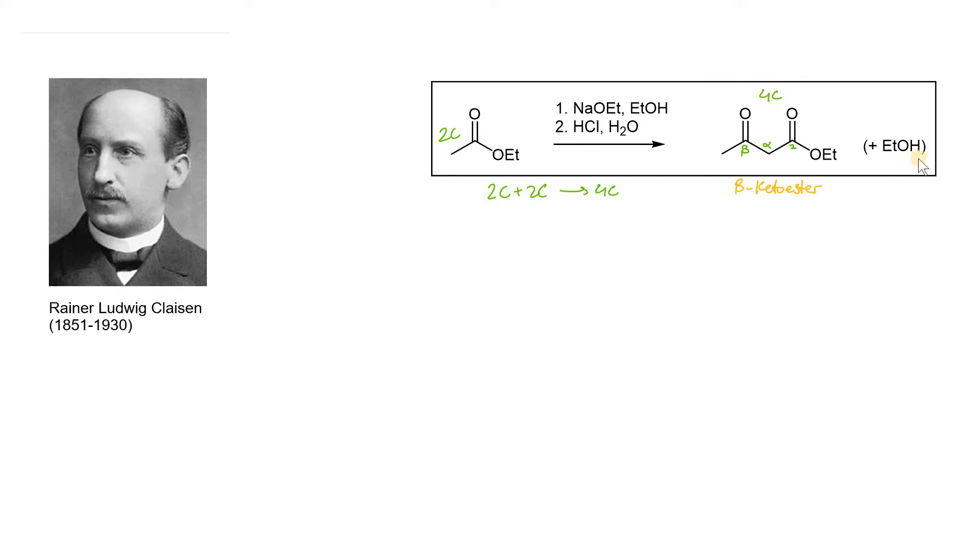Also, notice that ethanol was driven off. The Claisen condensation, compared to the aldol condensation, has a few differences. They both involve enolates. They both involve nucleophiles and electrophiles. That's understood. But with the Claisen condensation, the mechanism tells us the difference.